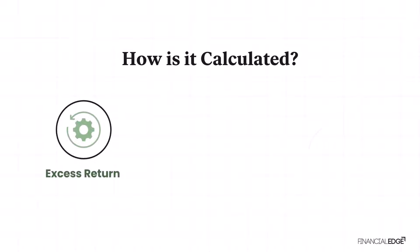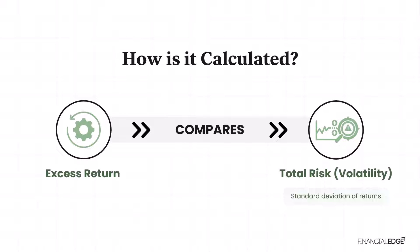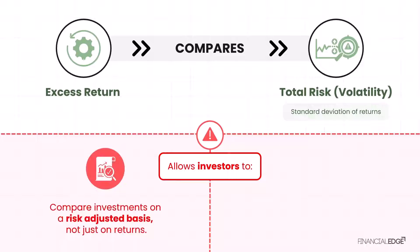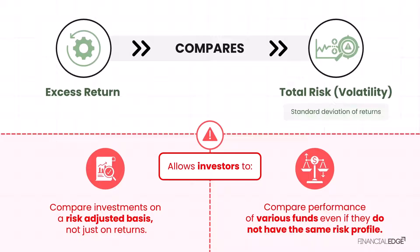Digging in deeper into how it's calculated, it compares the excess return to the total risk measured by the standard deviation of returns of the portfolio. Standard deviation of returns is also known as volatility. This allows investors to compare investments on a risk-adjusted basis and not just on returns, so it allows us to compare the performance of various funds, even if they don't have the same risk profile.